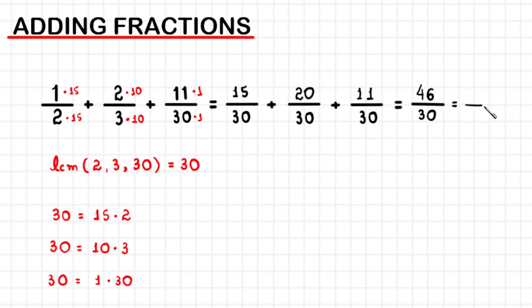But in this channel, we prefer the simplest form of the result. Notice that both 46 and 30 are divisible by 2. So, we divide. 30 divided by 2 equals 15. 46 divided by 2 equals 23. The final result, in the simplest form, is 23 over 15.